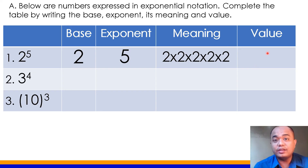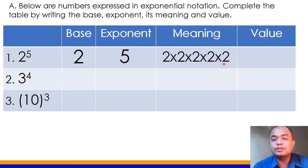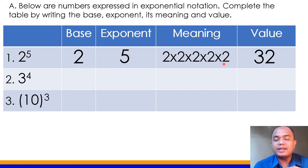How do we get the value? We will multiply 2 five times: 2 times 2 is 4; 4 times 2 is 8; 8 times 2 is 16; 16 times 2 is 32. So our answer here is 32.